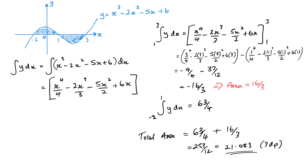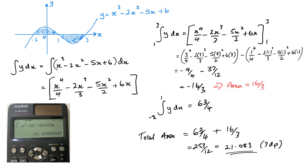Now, if I had not done them separately, I would have ended up with 63 over 4 minus 16 over 3, which would have given me the equivalent of 10.416 recurring — which you can see is quite a bit different. Just to show you within the calculator, you can see there's our y between 3 and negative 2, and we do indeed get that 10.416 recurring. So it's this point that you need to be careful: you need to understand what the curve looks like, whether you've got area below and above. If you do them together, they will give you the wrong answer, as one will be negative and one will be positive, so it won't give you the same total area.